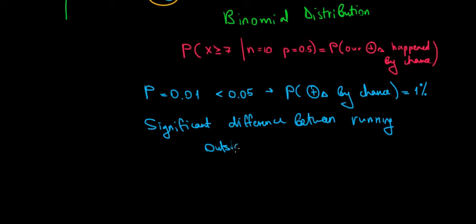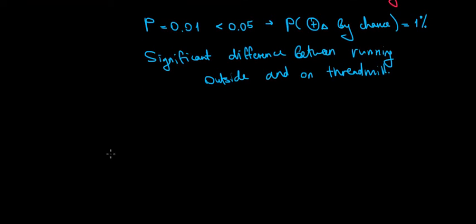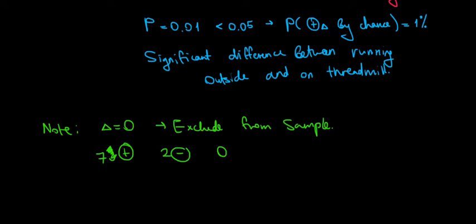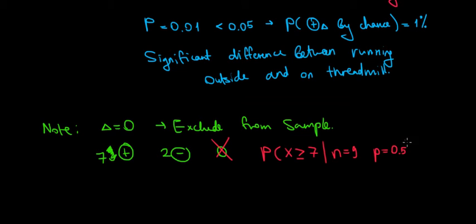One important remark: if we have a difference of zero — no difference between the two settings — we exclude those zeros from the sample. For example, if we had seven positive differences, two negative differences, and one zero, we remove the zero. The binomial distribution would then be the probability that X is at least seven given a sample of nine, with proportion 0.5, and we calculate these values from the table.